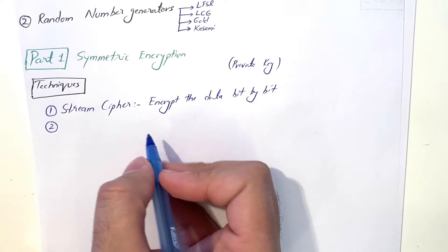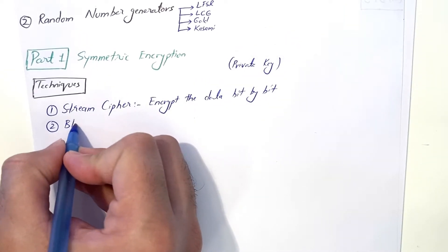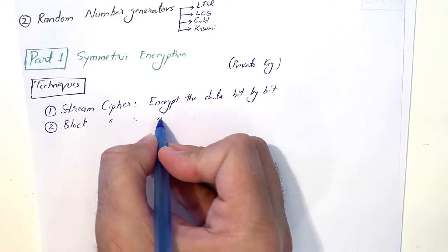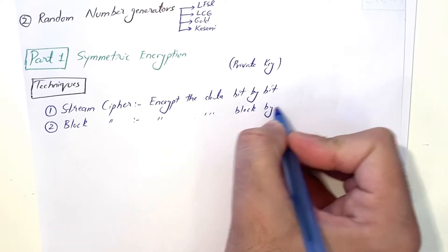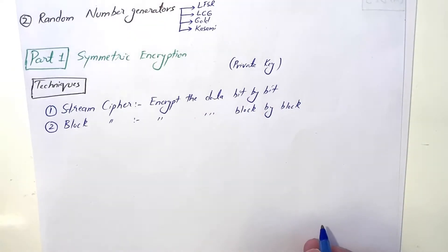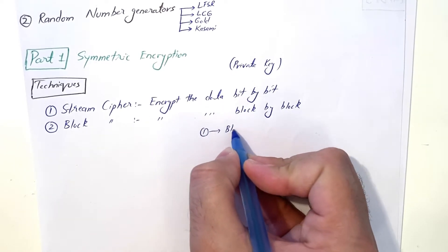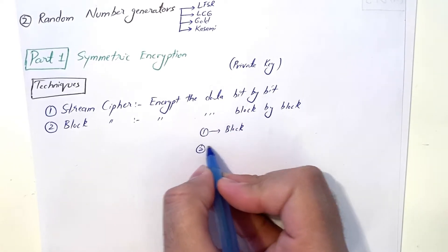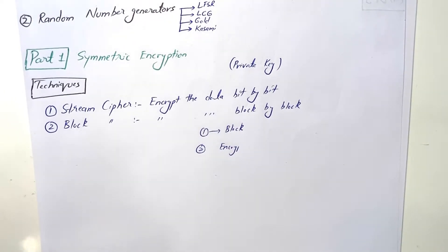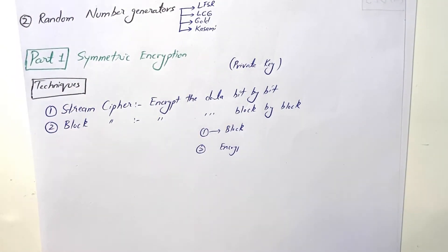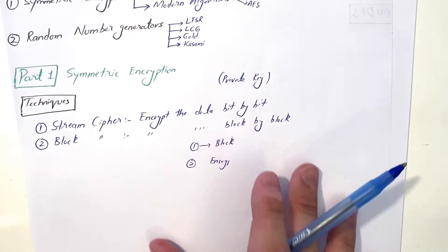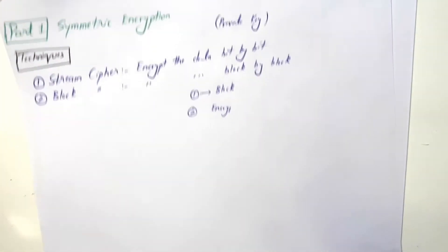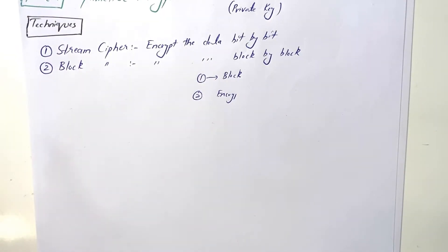The second technique is block cipher, where we encrypt data block by block. Before encryption, we first break the data into blocks, then start encrypting. There is a fixed block size depending on which algorithm you use. All block cipher algorithms — DES, triple DES, simplified DES, AES — are block cipher algorithms. However, you can customize these to work as stream ciphers depending on the application.